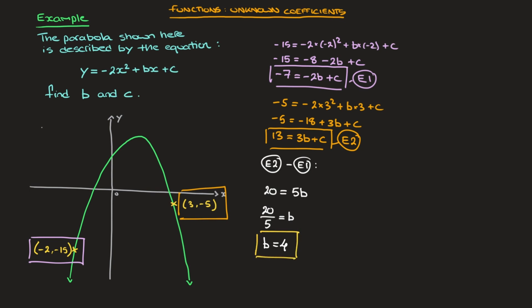Now to find the other unknown, c, all we have to do is use either one of the two equations and replace b by 4 and solve for c. Looking at the two equations, I'll choose the second one because there are fewer negatives. So going back to e2 and replacing b by 4, it turns into 13 equals 3 times 4 plus c. That's 13 equals 12 plus c. Subtracting 12 from both sides leads to 1 equals c. In other words, c equals 1.